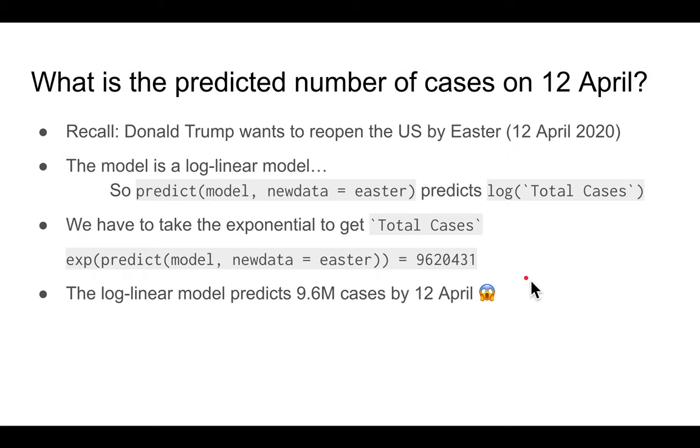So if you want to predict what's the number of cases that will be in the US on 12th of April, which remember, it's important to Donald Trump because he wants to see the churches packed on Easter. So let's make the prediction using our model. Remember, the model is a log linear model, not a regular linear regression model. So if you use the predicts function, you'll basically get the log of the total cases, not the total cases. So you have to take the exponential to get what you want, which is the total cases. And the log linear model will predict about 9.6 million cases by 12th April. So double yikes.